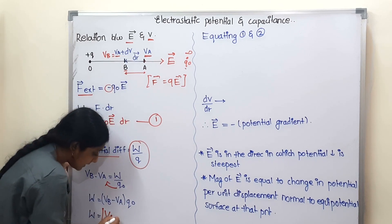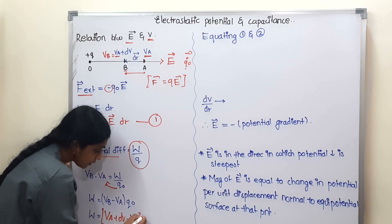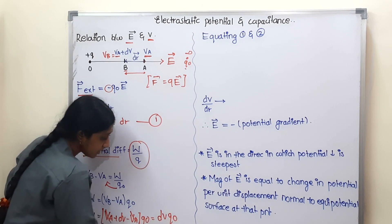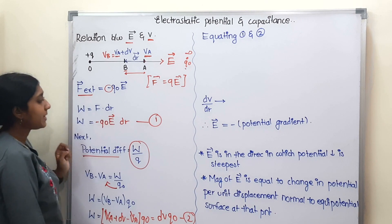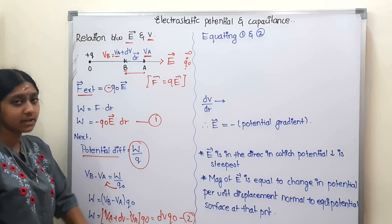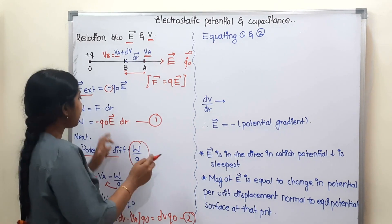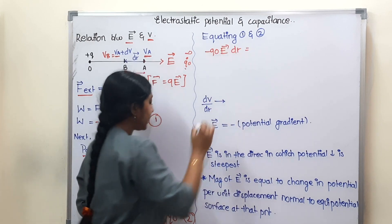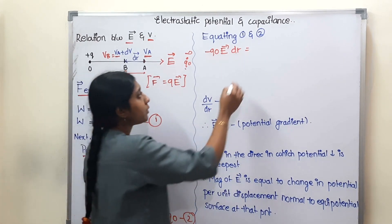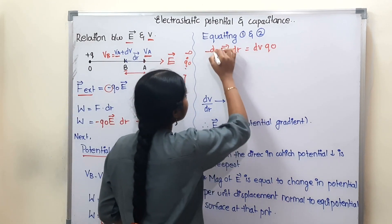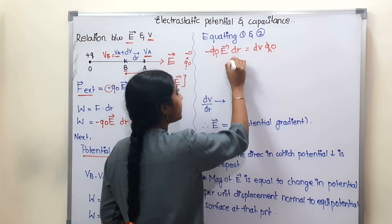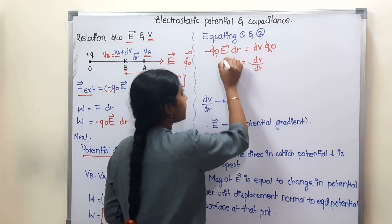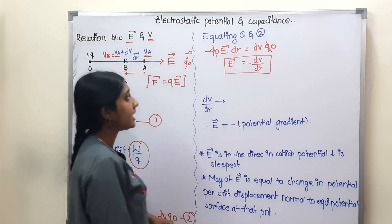Substituting: Vb = Va plus dV, so Vb minus Va equals dV. This is equation 2. Equating equation 1 and equation 2: −q₀ E-vector · dr = dV · q₀. Cancelling q₀, electric field E equals minus dV by dr.